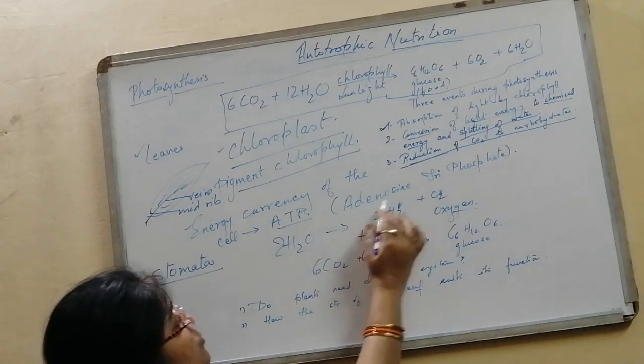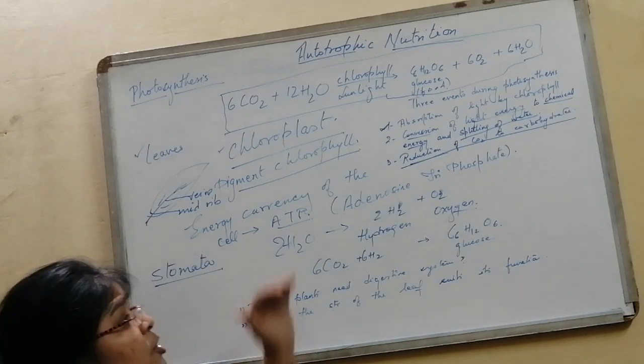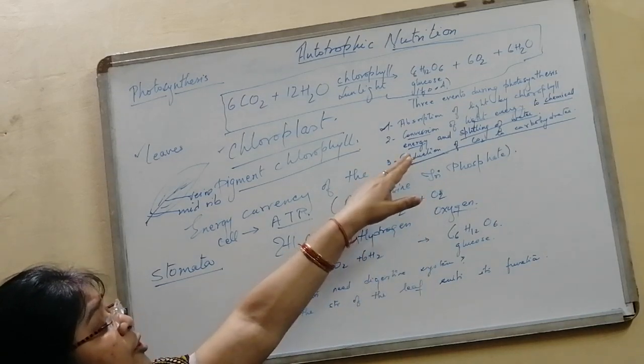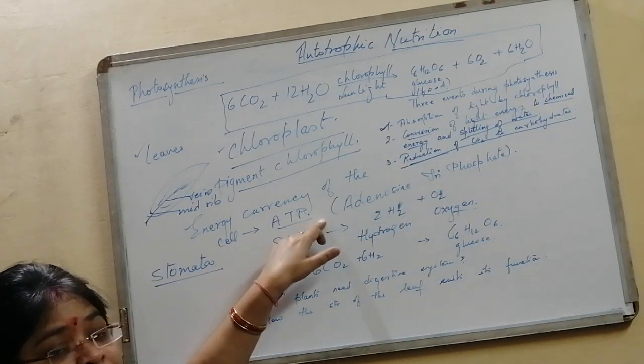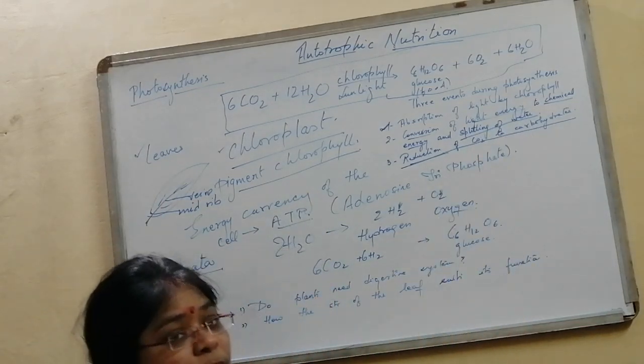That is adenosine triphosphate. So in the chloroplast, light energy is getting converted into ATP. Another important process taking place is splitting of water.